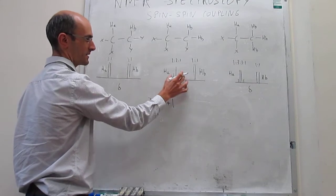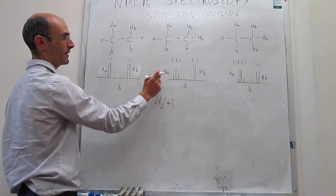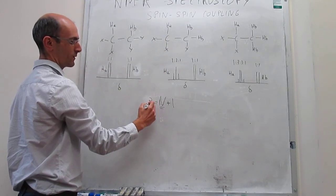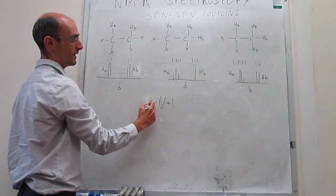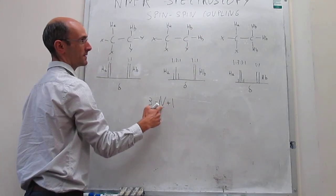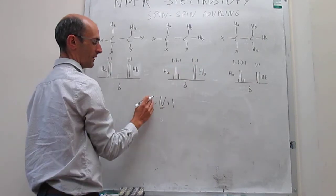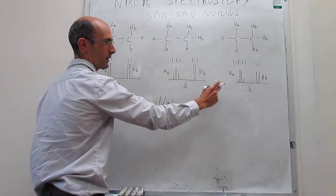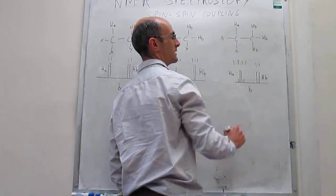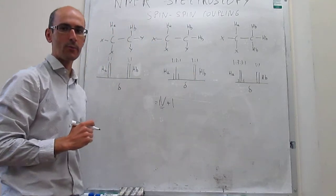Let's analyze other cases. If we take a look at the splitting pattern of Ha in the second molecule, Ha happens to be a triplet — three peaks — because two Hb's are splitting that signal, giving a triplet. And you can see how this rule is generic: in the third molecule you get a quartet because there are three NMR-active nuclei actually splitting that pattern.